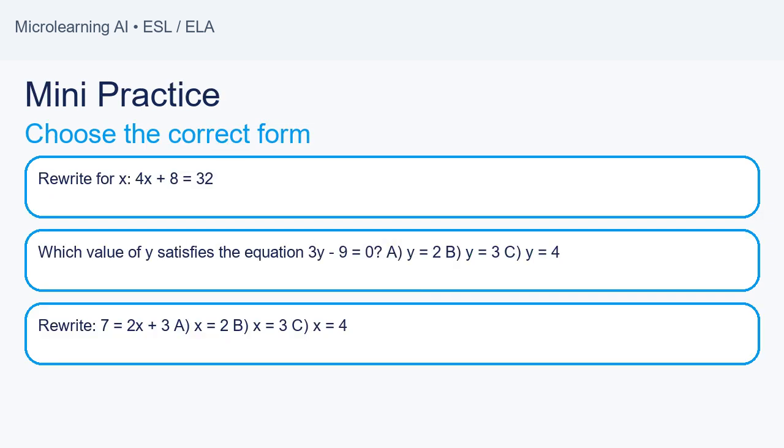Mini-practice. Choose the correct form. Problem 1: Rewrite for x. 4x plus 8 equals 32. Answer: x equals 6.